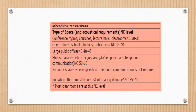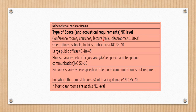This is the noise criteria level for different rooms, showing the type of space, acoustic requirements, and recommended noise levels. For conference rooms, churches, lecture halls, or classrooms, the recommended noise criteria is 30 to 45. For open offices, schools, lobbies, and public areas, it is 35 to 40. For large public offices, the noise criteria is 40 to 45. For commercial spaces like shops for just acceptable speech and telephone communication, the noise criteria is 50 to 60, and so on.